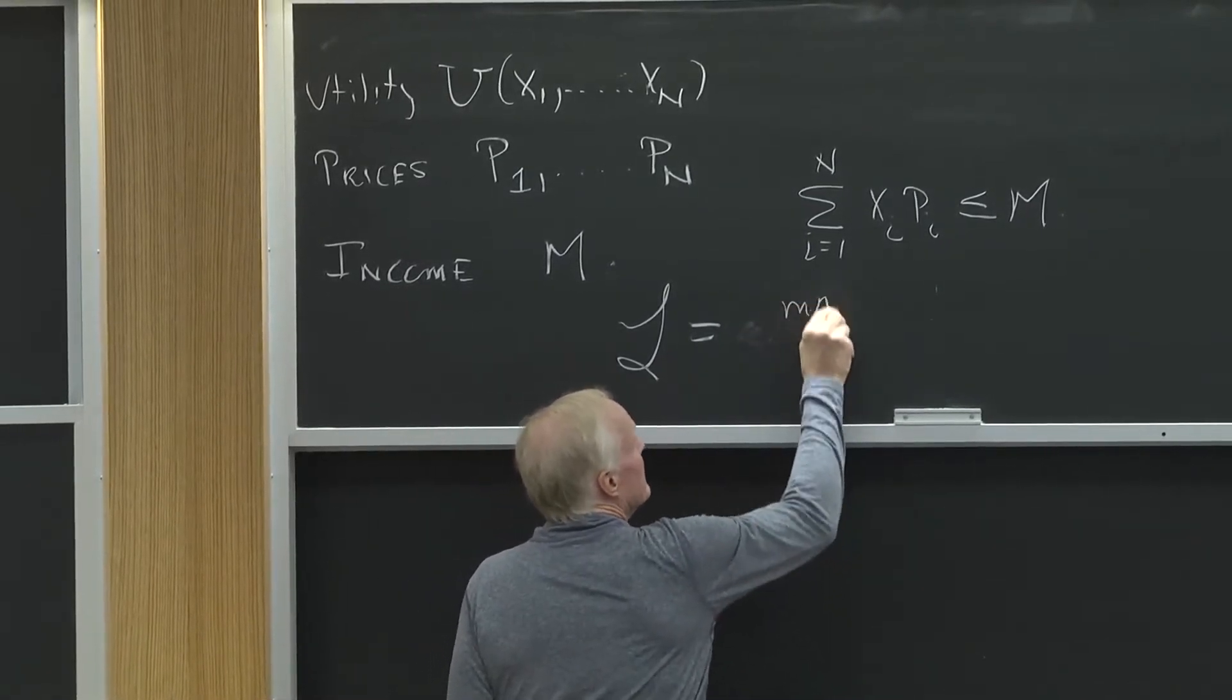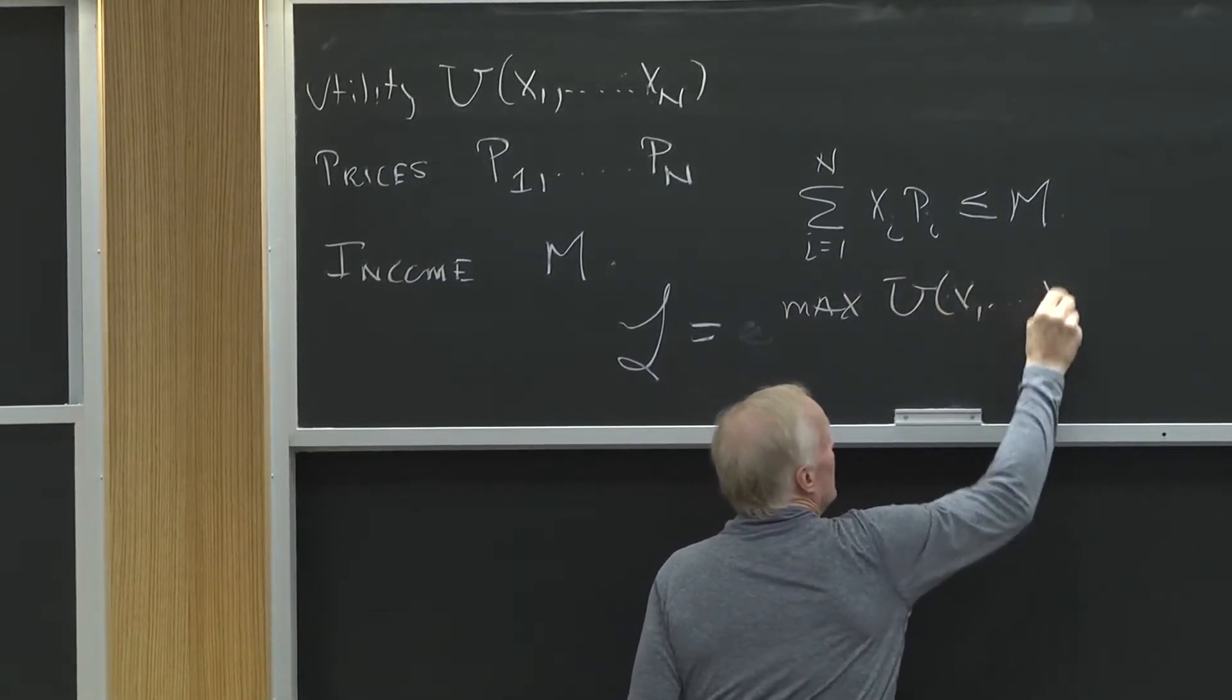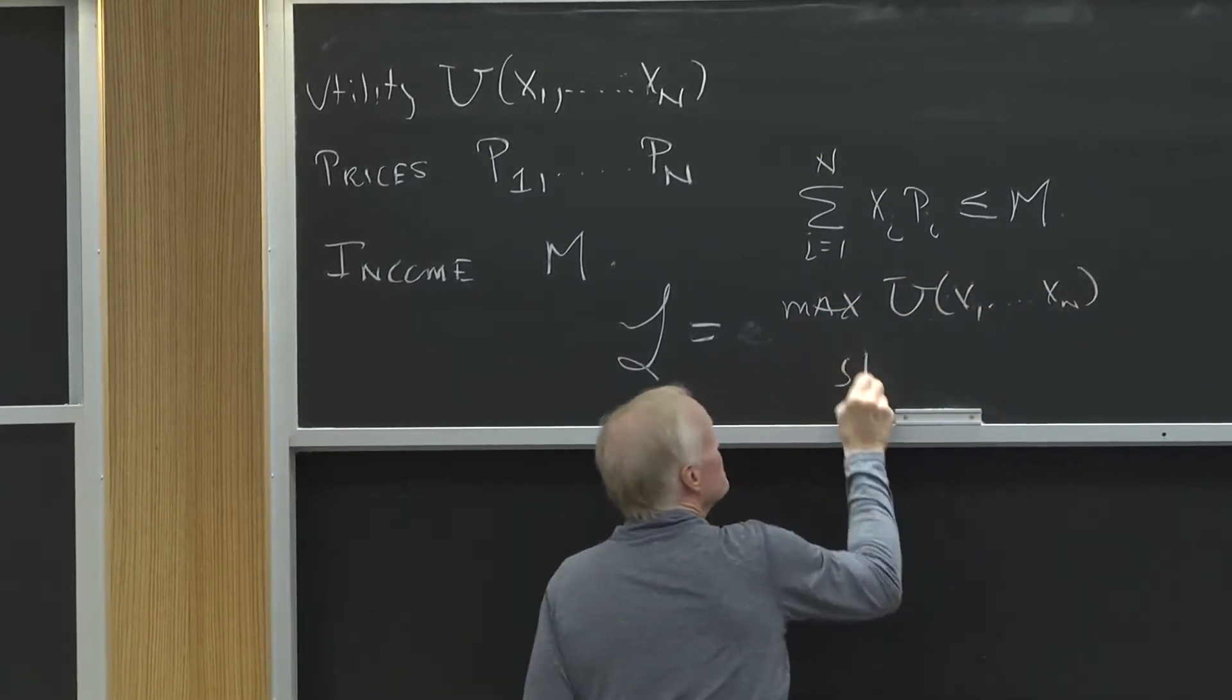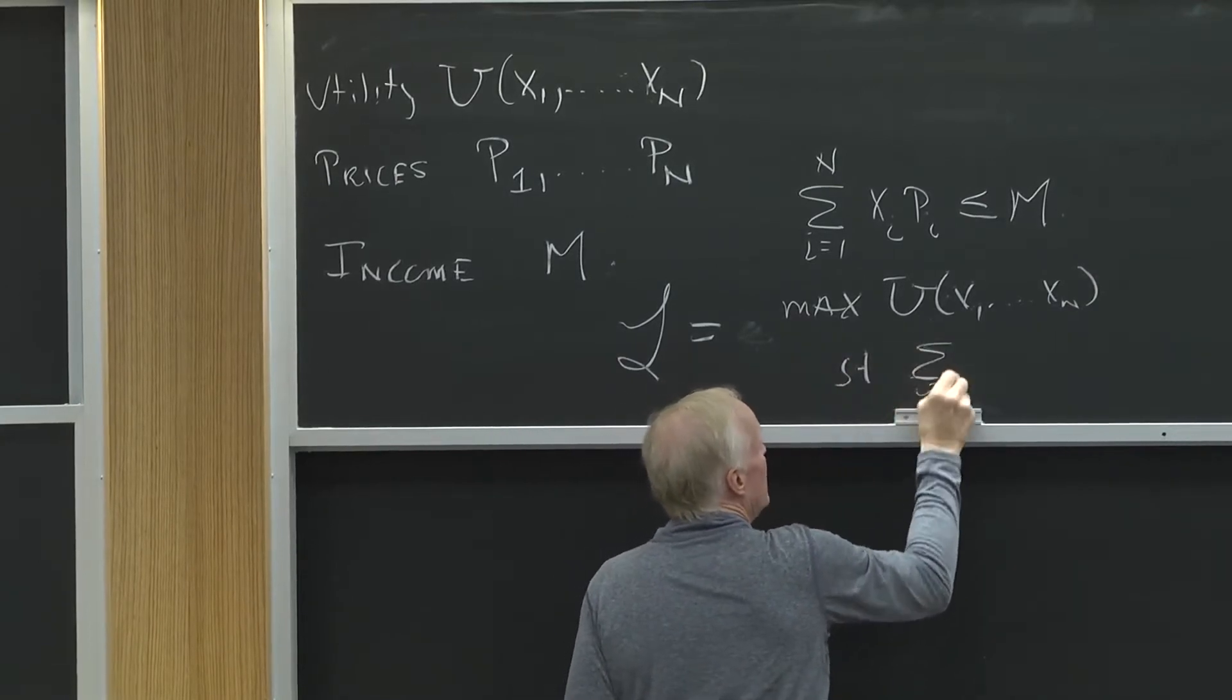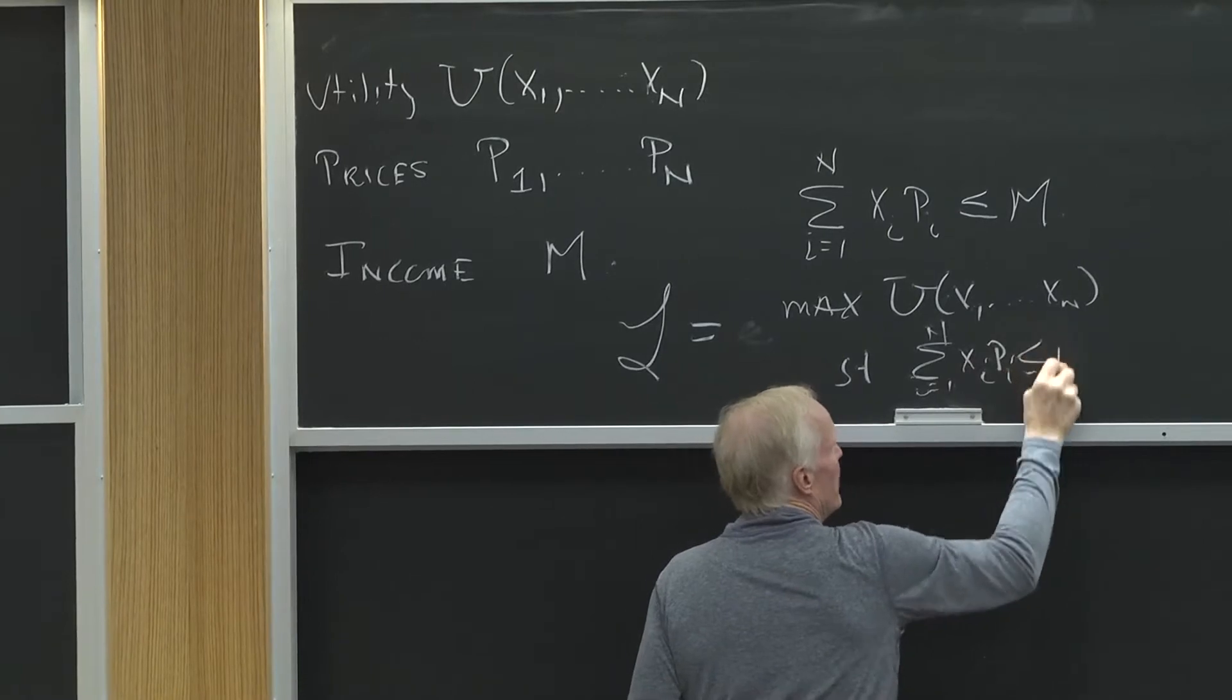So we're going to max u of x1 to xn, subject to the sum of i equals 1 to n, xi pi, less than or equal to m.